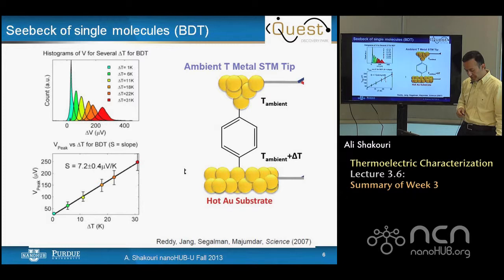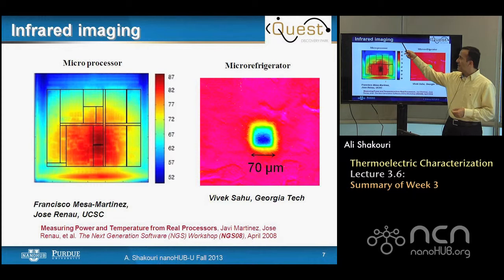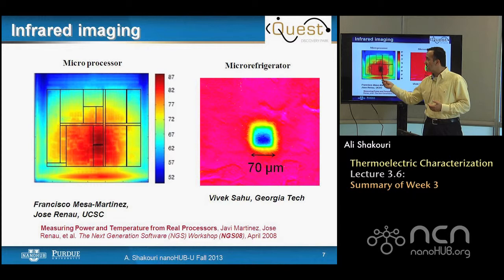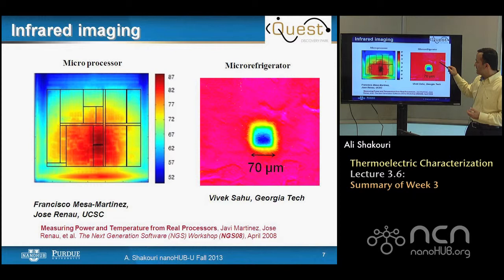Moving from contact to non-contact techniques for measuring temperature: infrared imaging is often used. It works for microscopic objects from centimeter size down to tens of microns, but not much below that due to the diffraction limit. A key issue is that you need a material with good emissivity — metals are shiny and poor emitters, and many semiconductors are transparent at long-wavelength IR — so you often need to coat with a black coating. So it's not perfectly non-contact, but still works for large objects.